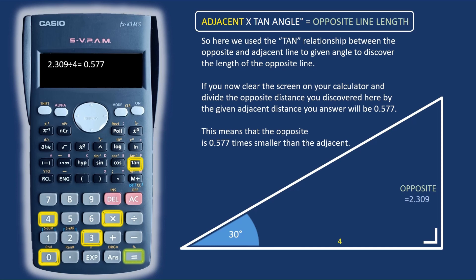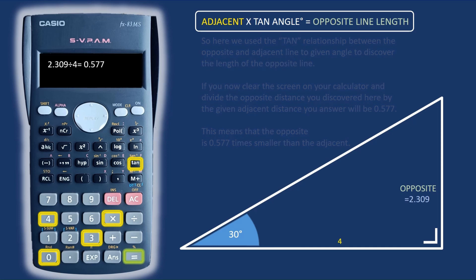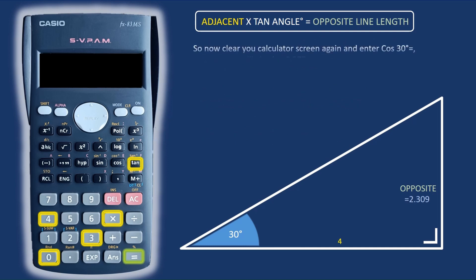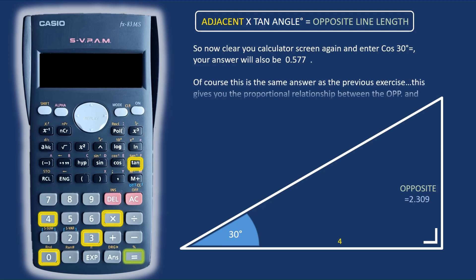If you now clear the screen on your calculator and enter that opposite distance of 2.309 divided by 4, you will come up with an answer of 0.577. So that's telling you that the opposite line is 0.577 times smaller than the adjacent line.